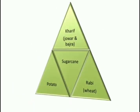The various crops grown in this village are beautifully shown with the help of a pyramid. Kharif crops are grown there, sugarcane, Rabi crops and potato. These are the main crops grown in this village. Kharif crops mainly include jowar and bajra, and these are sown in the rainy season. In the winter season, we sow wheat crops.